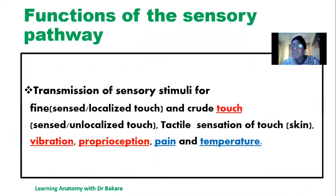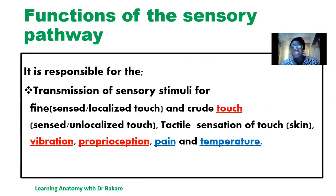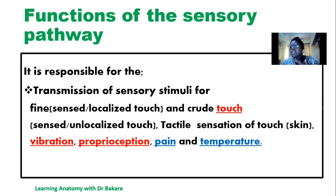The function of the sensory pathway, as described in our previous lecture on the sensory pathway of the anterior head region and the face — which is strictly supplied by the trigeminal nerve — we said that they help in the transmission of stimuli, which could either be touch. Touch could be fine or crude. Fine touch is a type of touch that can be sensed and localized; you can feel it and know where it is coming from. Crude touch is also known as light touch — a kind of touch that is perceived but cannot be localized.